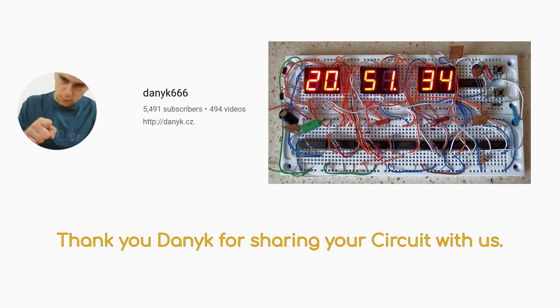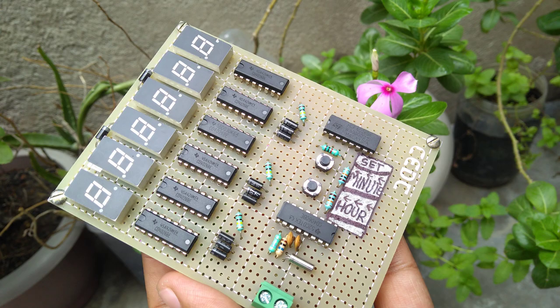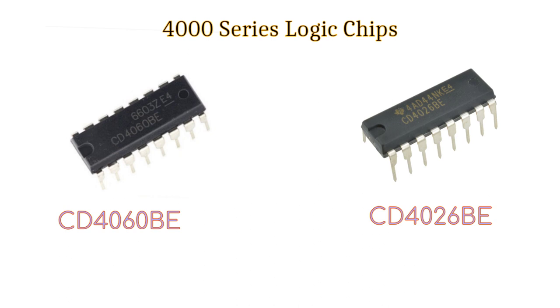First of all, a huge thanks to thenic because the design I used for making this digital clock is not my own. I use the circuit provided by thenic. For building the clock, you need two 4000 series logic integrated circuits for the clock: the 4060 IC and the 4026 IC.